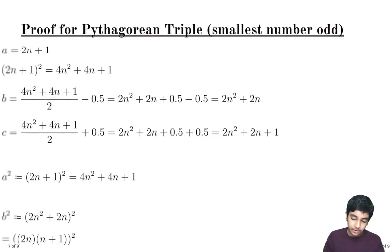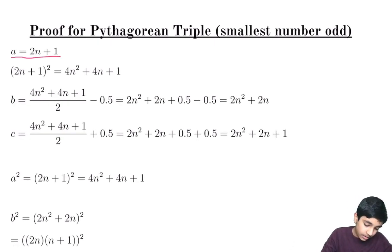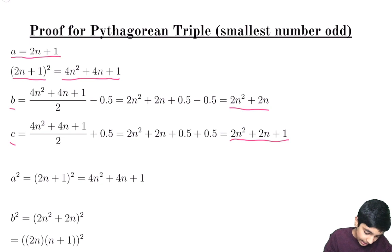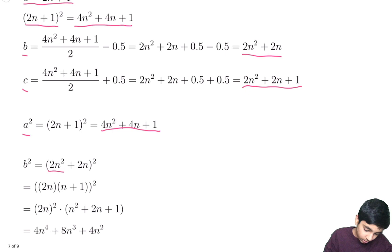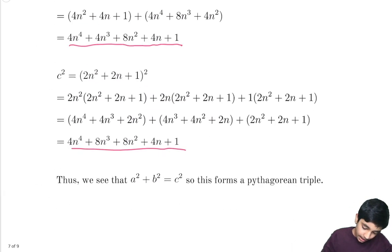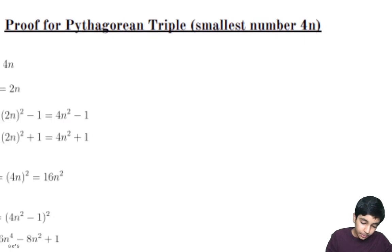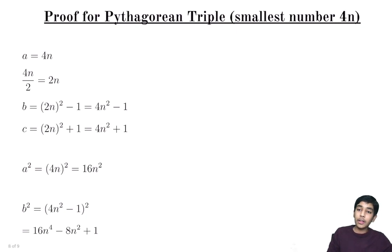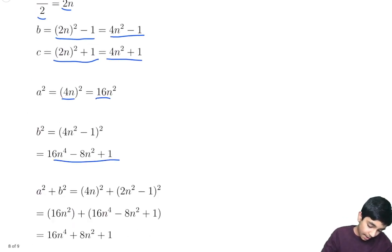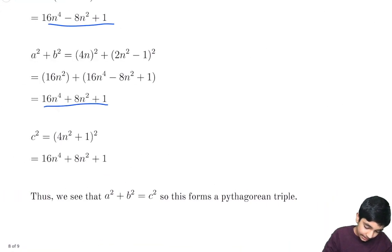Now let's move on to the proof for the Pythagorean triple where the smallest number is odd. We say a is 2n plus 1, then we square it to get 4n squared plus 4n plus 1. From here, b equals 2n squared plus 2n, and c equals 2n squared plus 2n plus 1. We can verify that a squared plus b squared equals c squared — I won't go too much into the algebra, but you can verify it yourself. There's also a proof for the second property — you can pause the video to read it — where a is 4n, divided by 2, squared, subtract 1 and add 1; and again a squared plus b squared equals c squared.